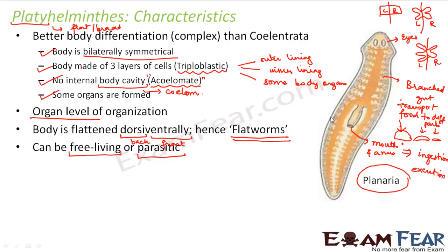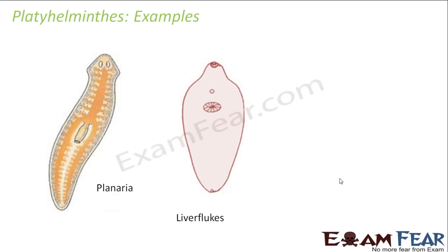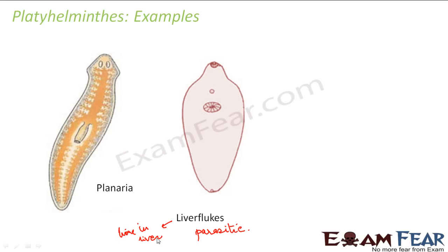Platyhelminthes are definitely mobile. Examples include Planaria and liver flukes. Liver flukes are highly parasitic — they live in the liver of mammals, including humans, feed on blood, and produce eggs that can reach the intestine and cause infections.